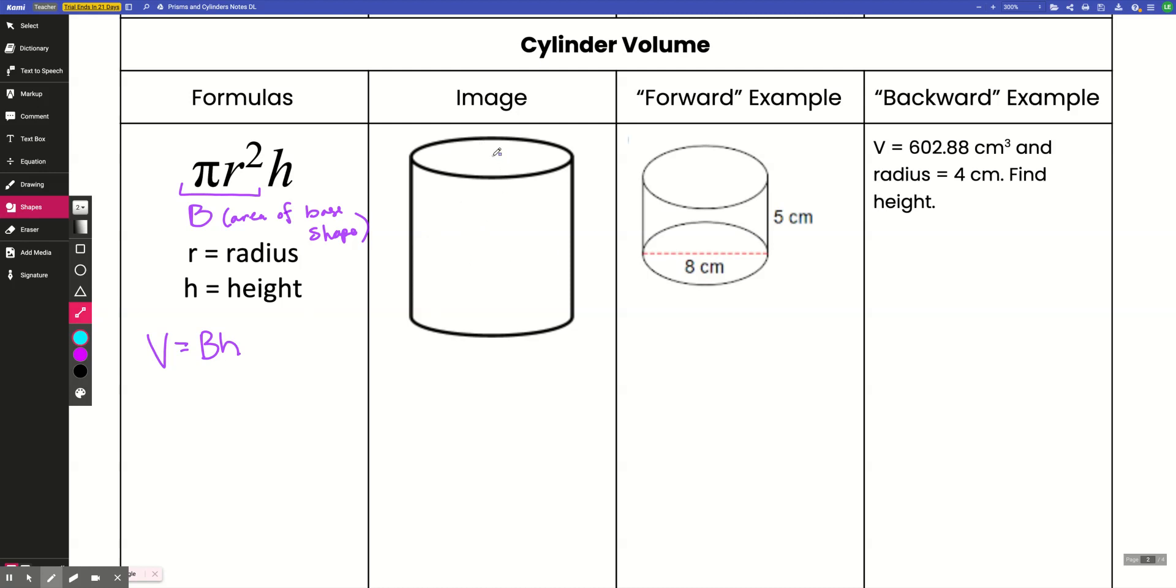So in my cylinder here, remember that radius goes from the center of the circle out to its circumference, out to its edge. And then h is obviously here, the height of the cylinder.